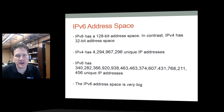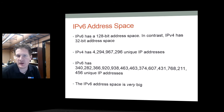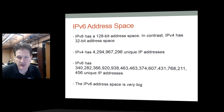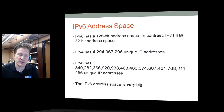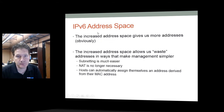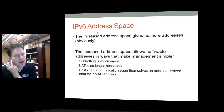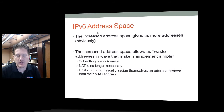IPv6 has a much larger address space than IPv4. IPv6 has a 128-bit address as opposed to IPv4's 32-bit address. Whereas IPv4 had about 4 billion addresses, IPv6 has a vastly larger number of unique address capabilities. Because IPv6 has so many possible addresses, we can be very liberal with the use of IP addresses, whereas in the past we've been restricted by the size of the address space.